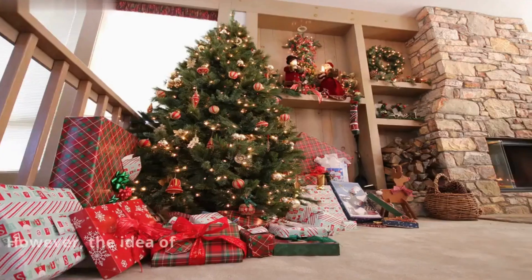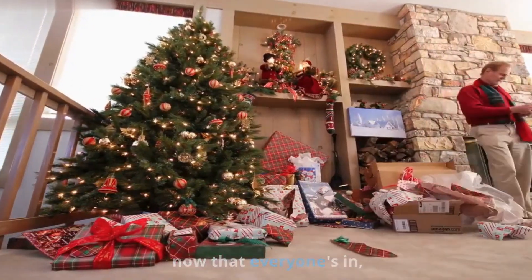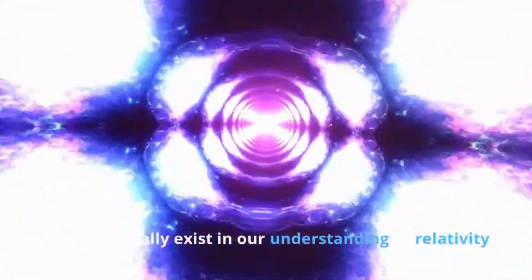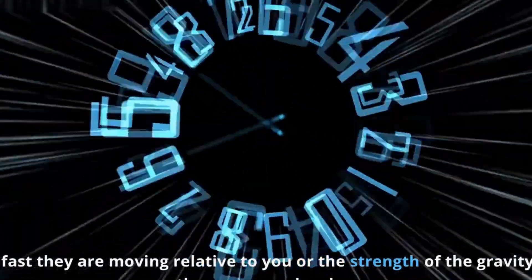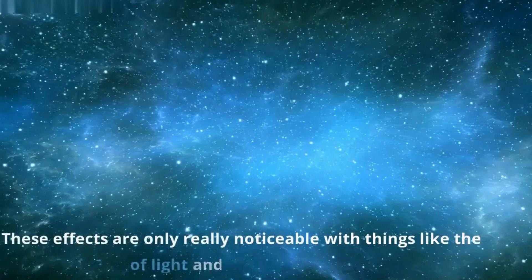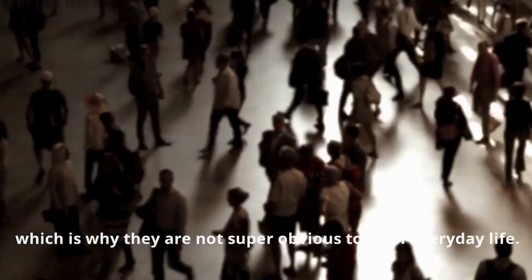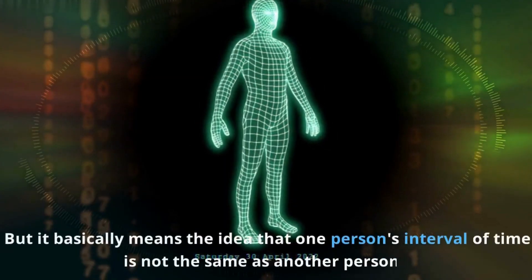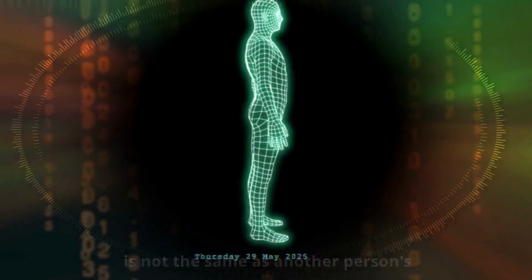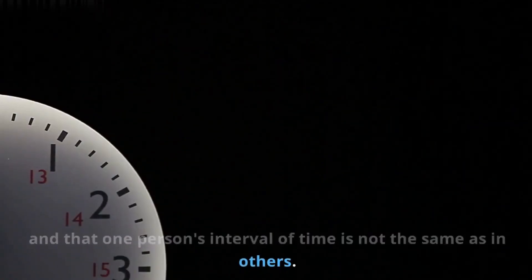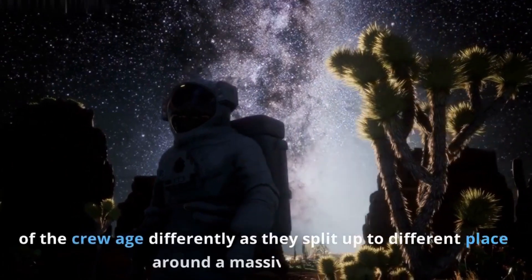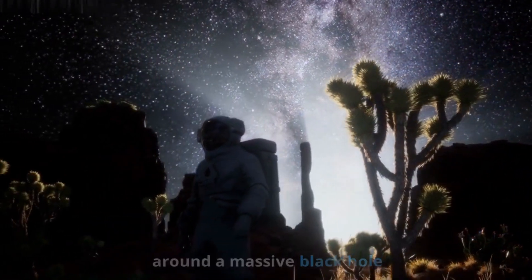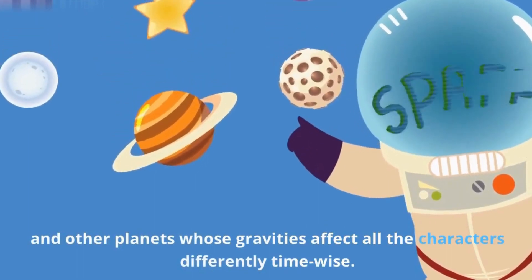However, the idea of a common present, meaning the time right now that everyone's in, doesn't actually exist in our understanding of relativity. Precisely how someone else's time is sliced up depends on how fast they are moving relative to you or the strength of the gravity they're experiencing. These effects are only really noticeable with things like the speed of light and supermassive gravity, which is why they are not super obvious to us in everyday life. But it basically means the idea that one person's interval of time is not the same as another person's. If you watch Interstellar, there's a pretty basic explanation of this as different members of the crew age differently as they split up to different places around a massive black hole and other planets whose gravities affect all the characters differently time-wise.